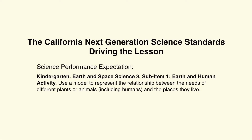The California Next Generation Science Standards driving the lesson. The science performance expectation is Kindergarten, Earth and Space Science 3, sub-item 1, Earth and Human Activity, where students who demonstrate understanding can use a model to represent the relationship between the needs of different plants or animals, including humans, and the places they live. Watch for how these California Standards are addressed throughout the lesson.